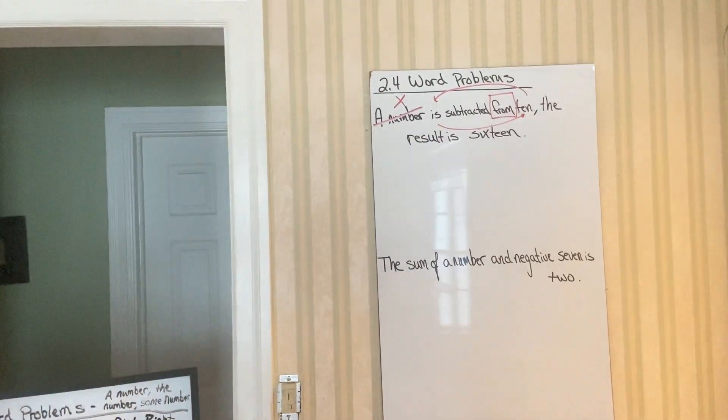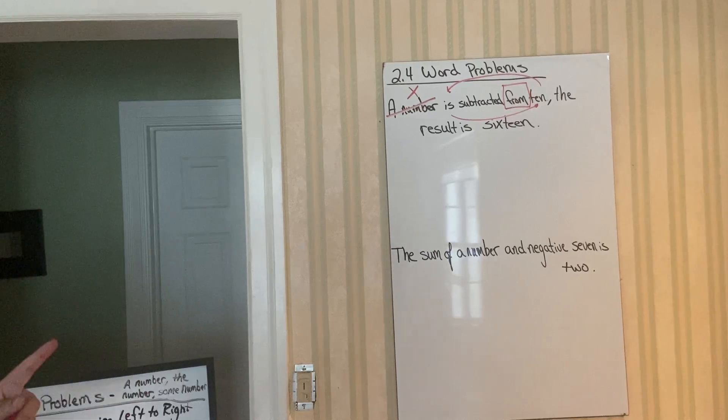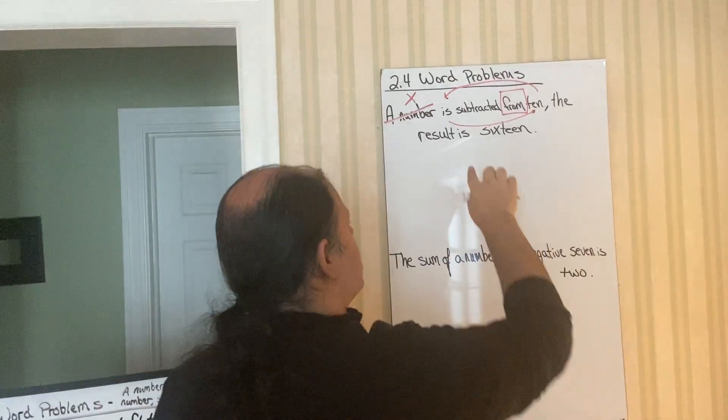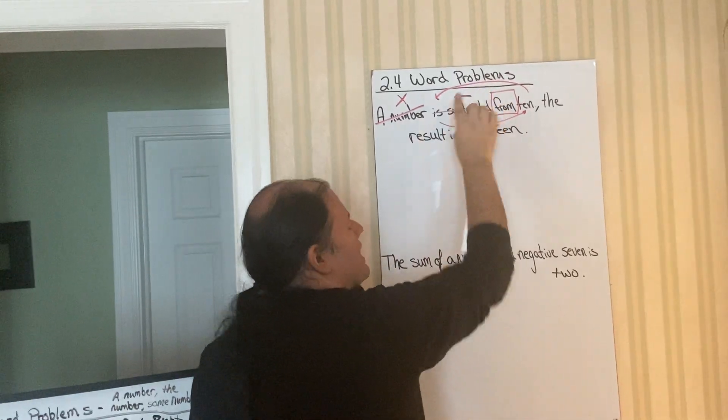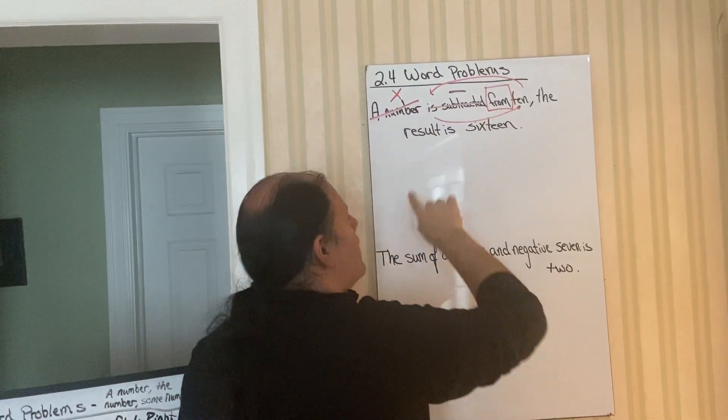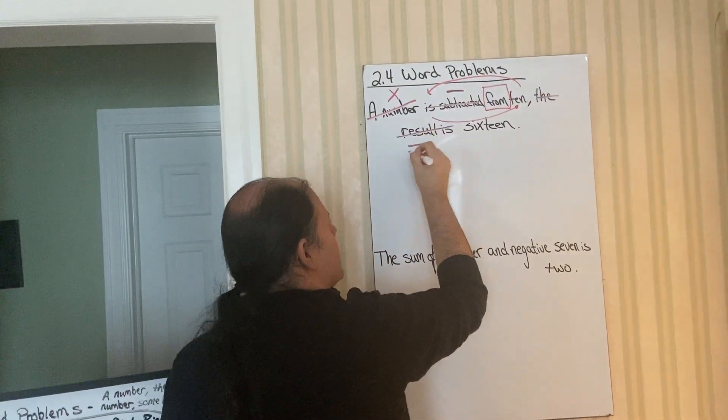Next step, step three, translate any key buzzwords. So notice we have is subtracted. You know, subtraction just means a minus symbol. The result is, there's your equal sign.